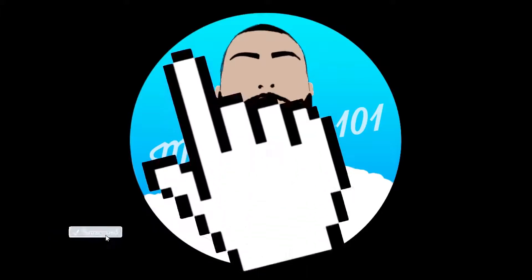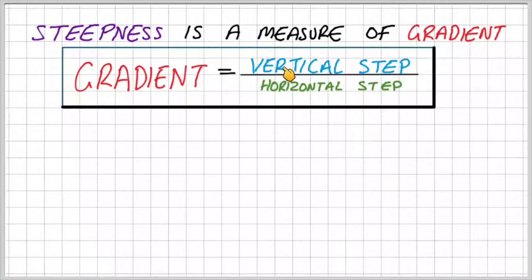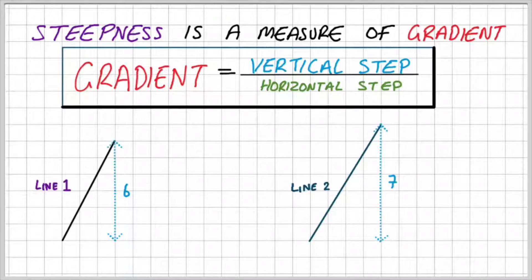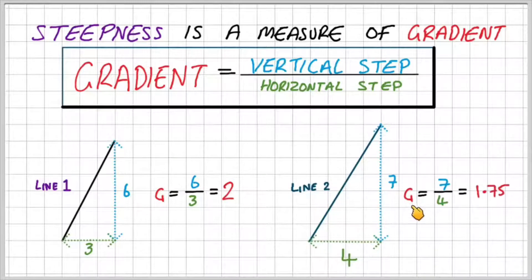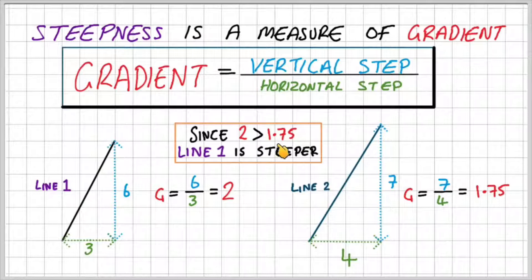So first thing first, steepness is a measure of gradient. And gradient is the vertical step divided by the horizontal step. So if you look back at line 1 and line 2, line 1 has a vertical step of 6 units and a horizontal step of 3 units. That gives us a gradient of 2. Line 2 has a vertical step of 7 units and a horizontal step of 4 units, which gives us a gradient of 1.75. So since 2 is greater than 1.75, line 1 is technically steeper.